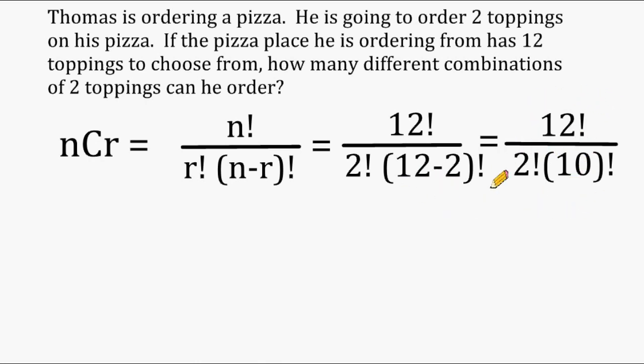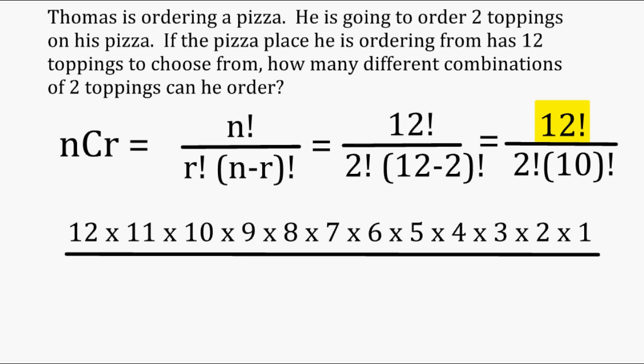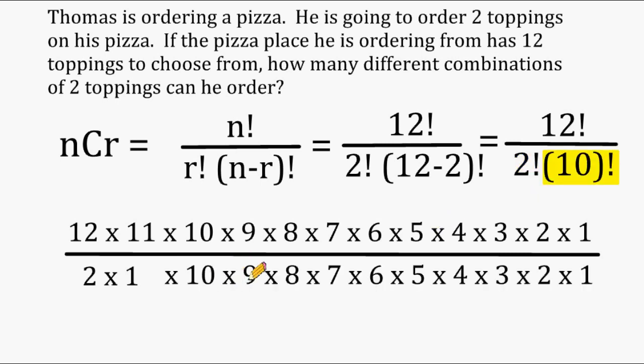Next, we're going to take these factorial statements and write them in expanded form. So 12 factorial would look like this: 12 times 11 multiplying backwards all the way until we hit the number 1. And then for the denominator, we have to write 2 factorial in expanded form, which is just 2 times 1, and then we have to multiply that by 10 factorial, which is 10 times 9 times 8 all the way backwards until we hit the number 1.